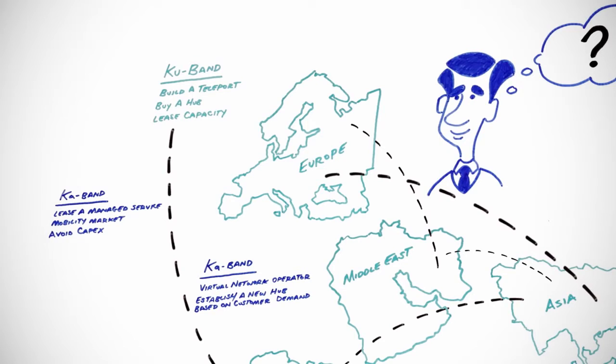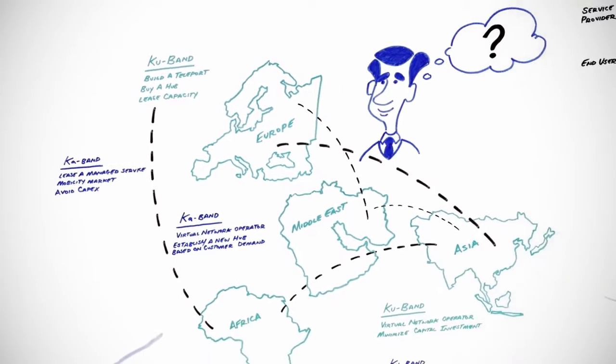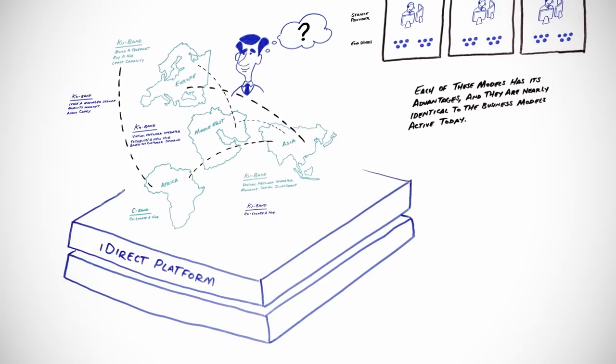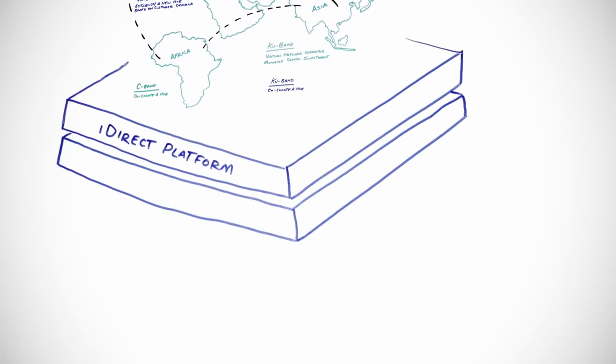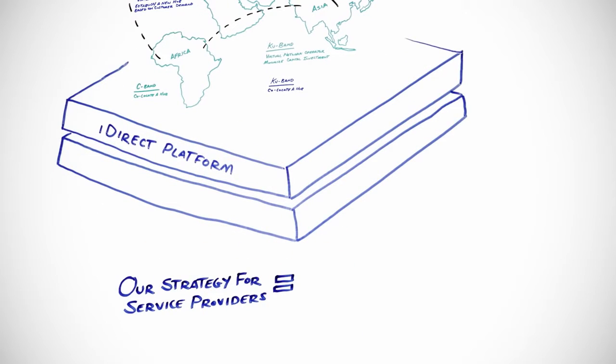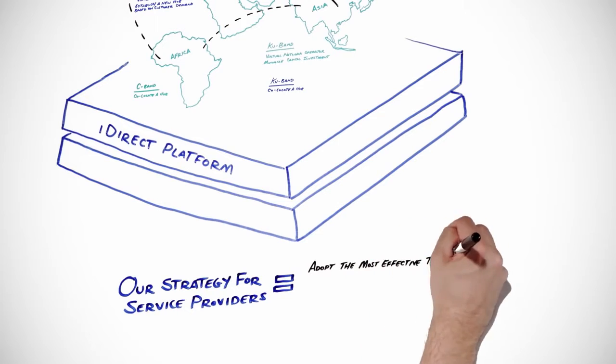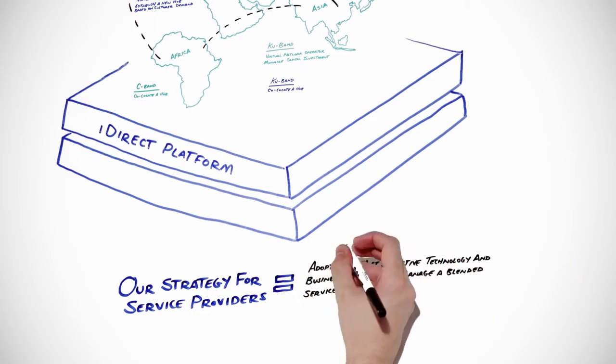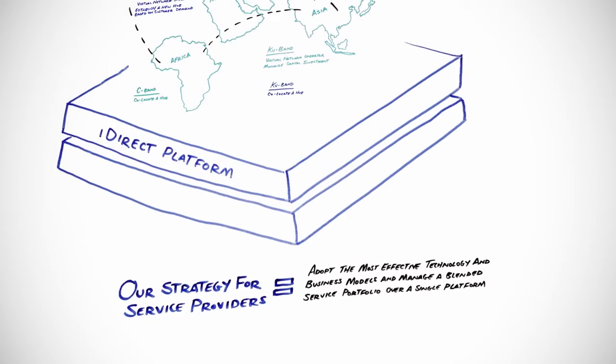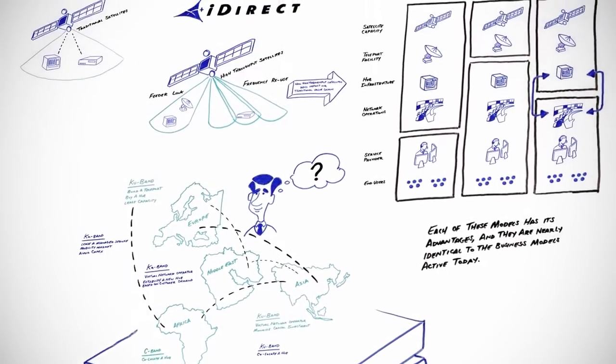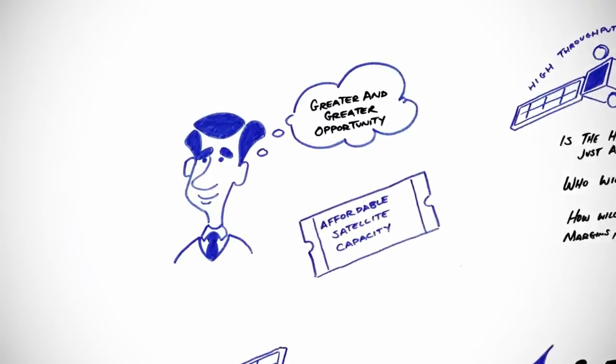So how do you manage all this in the future? Everything can be integrated on the iDirect platform. Our strategy for our partners is simple. Adopt the most effective technology and business models and manage a blended service portfolio over a single platform. Then, the only thing on your mind will be greater and greater business opportunity.